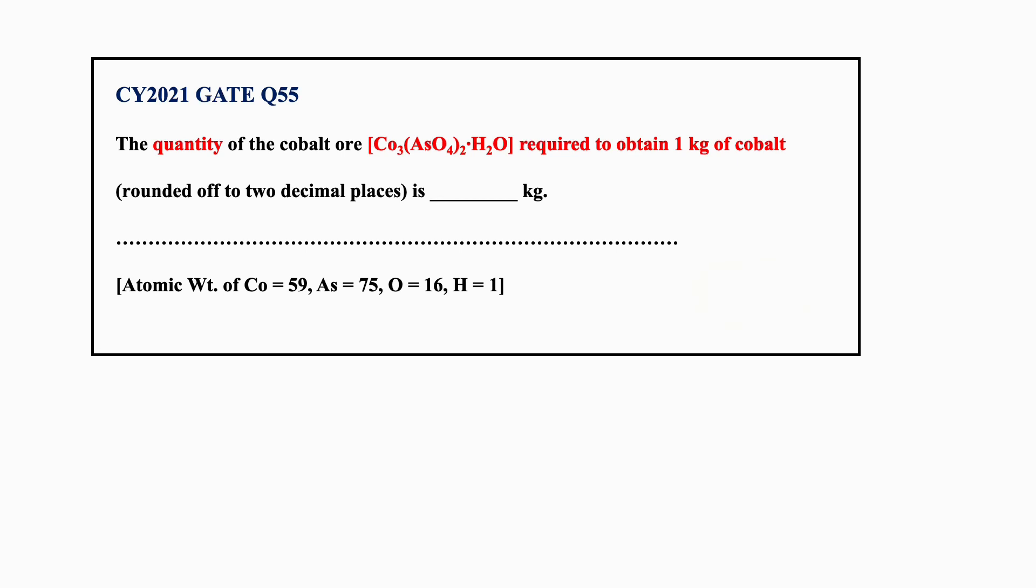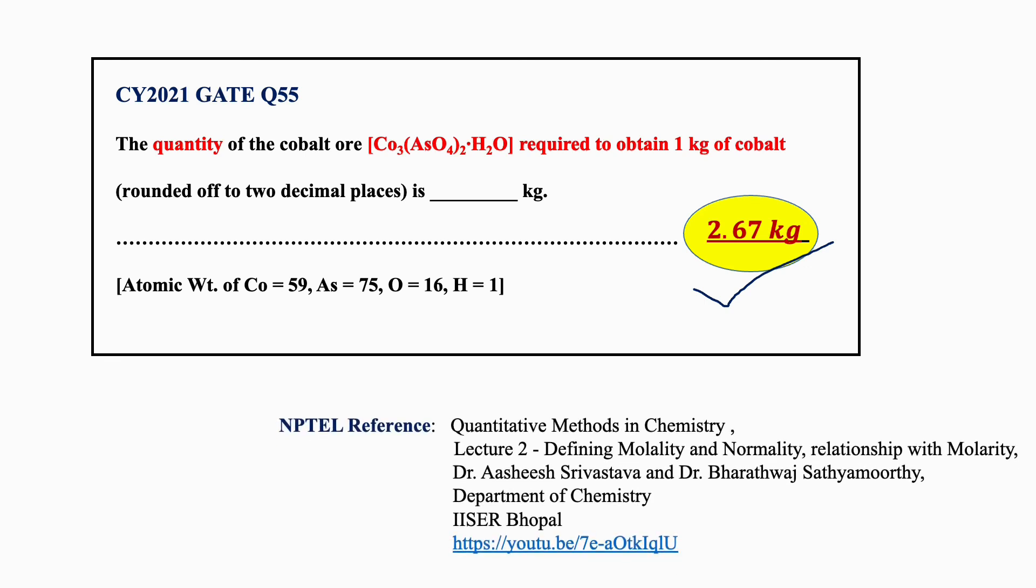The quantity of cobalt ore required to obtain 1 kg of cobalt is 2.67 kg. For more details, you can refer back to Quantitative Methods in Chemistry, NPTEL lectures by Dr. Ashish Srivastava and Dr. Bharathwaj Sathyamurthy from IISc Bangalore, and the link is also given here.